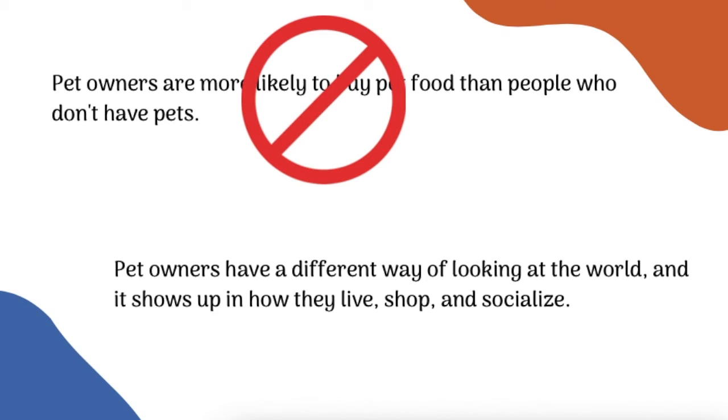But saying that pet owners interact with the world differently is a lot more interesting. Remember, your thesis statement doesn't have to give all of the details - it just hints at what is going to come later. So in this example: "Pet owners have a different way of looking at the world, and it shows up in how they live, shop, and socialize." I don't know all the details of what makes pet owners different, but I know that this paper is going to give me that information.